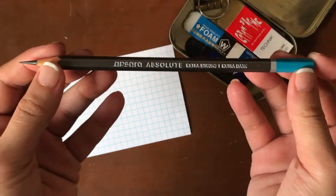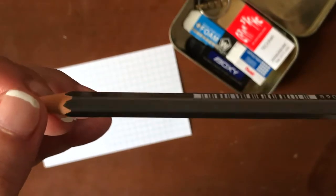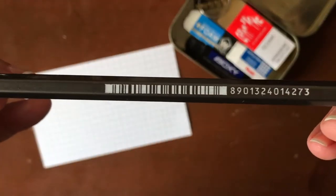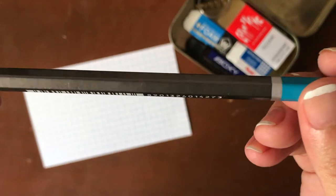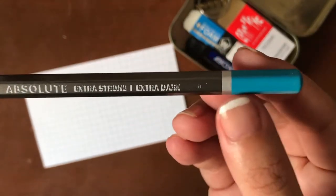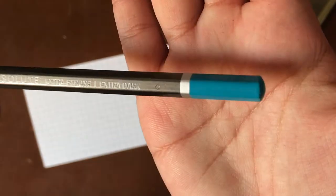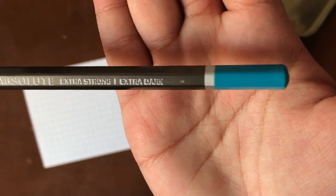We have this sharpened Apsura Absolute. You can see that the paint job is a charcoal gray, has a barcode here. We have some silver detailing right here. And then the ferrule is dip painted in this gorgeous teal color. So it's really nice.